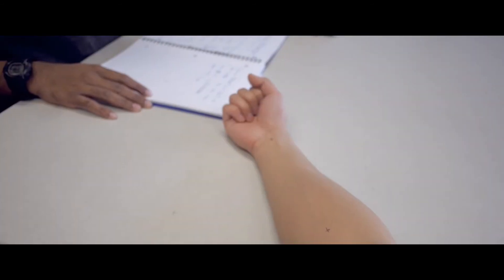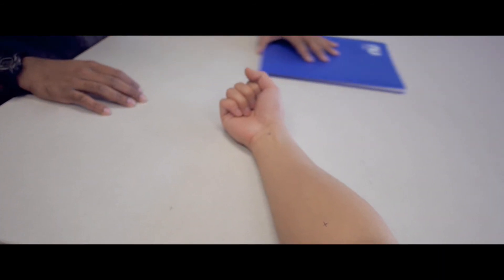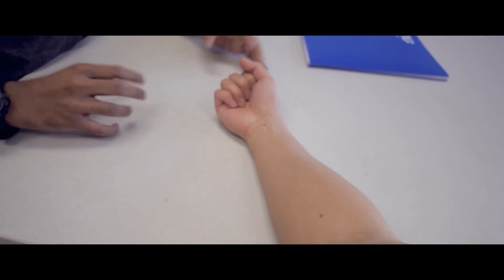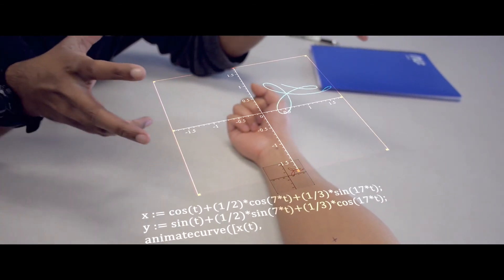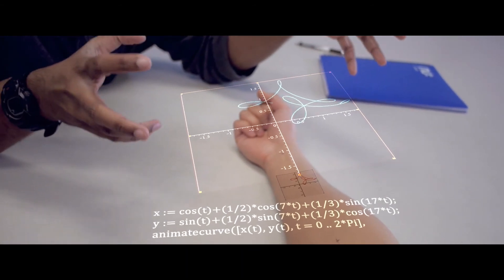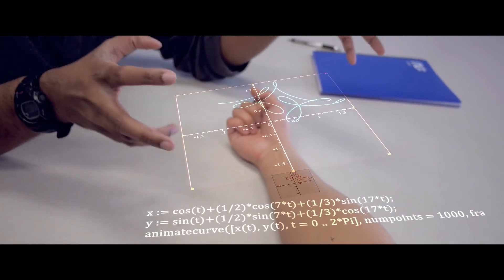What will it be, sir? Surprise me, Mr. Tattoo Man! How about a parametric curve? A function dependent on two variables, x and y, which both are dependent on a third variable, t, for time. This can be represented using an animated curve.